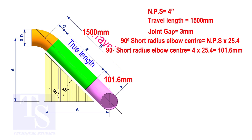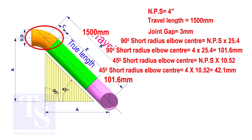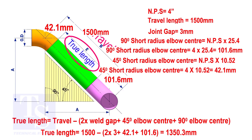To calculate the elbow center of a 45 degree short radius elbow, multiply the nominal pipe size by 10.52. The answer is 42.1 millimeters. To calculate the true length of the pipe, subtract two weld gaps plus both elbow centers from the travel length. The true length of the pipe is 1350.3 millimeters.